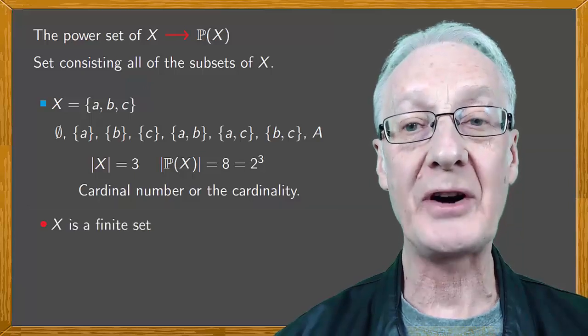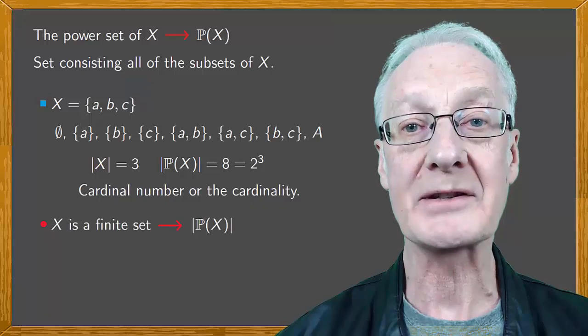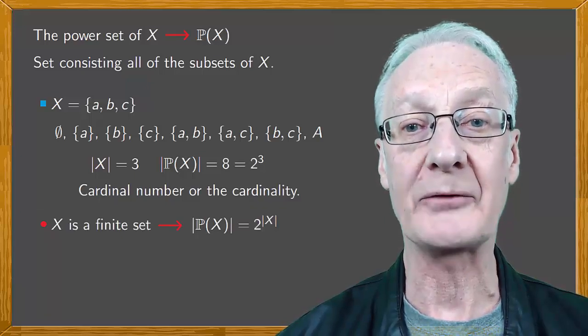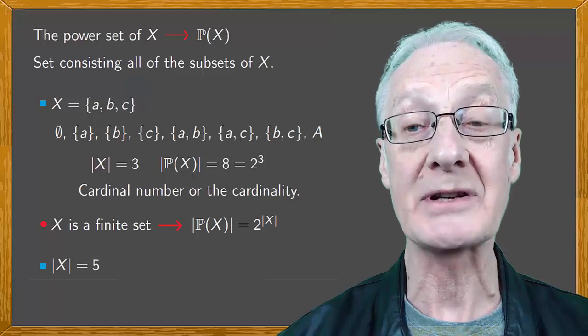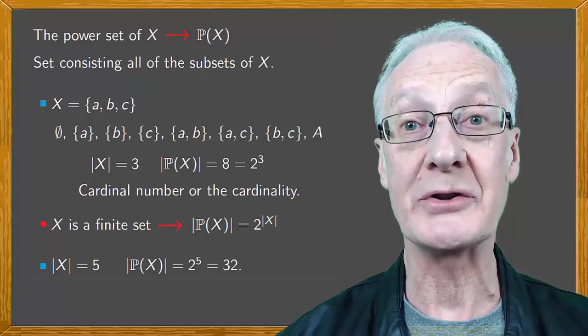In general, if X is a finite set, then the cardinal number of P(X) is 2 raised to the cardinality of X. For example, a set of five elements has 2 raised to the power of 5 subsets, which is 32.